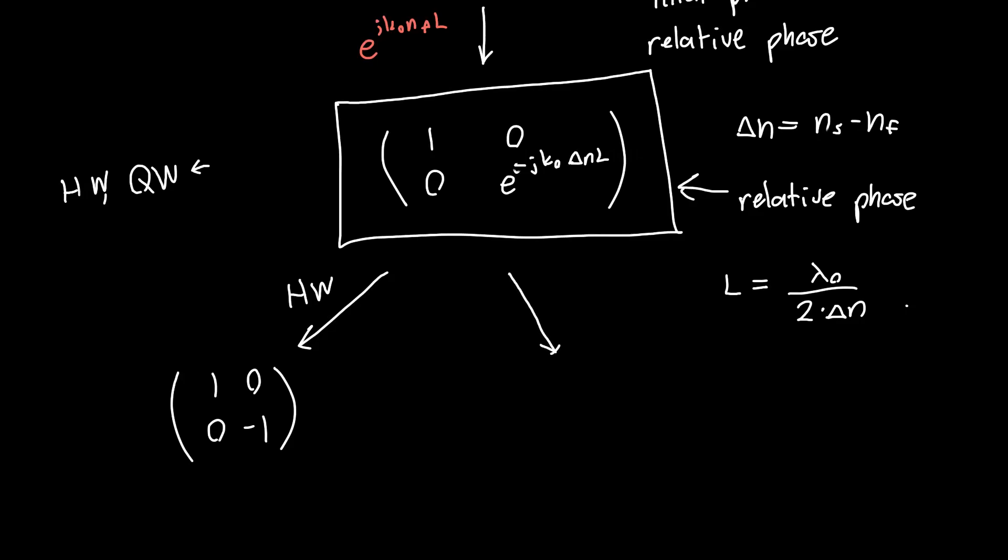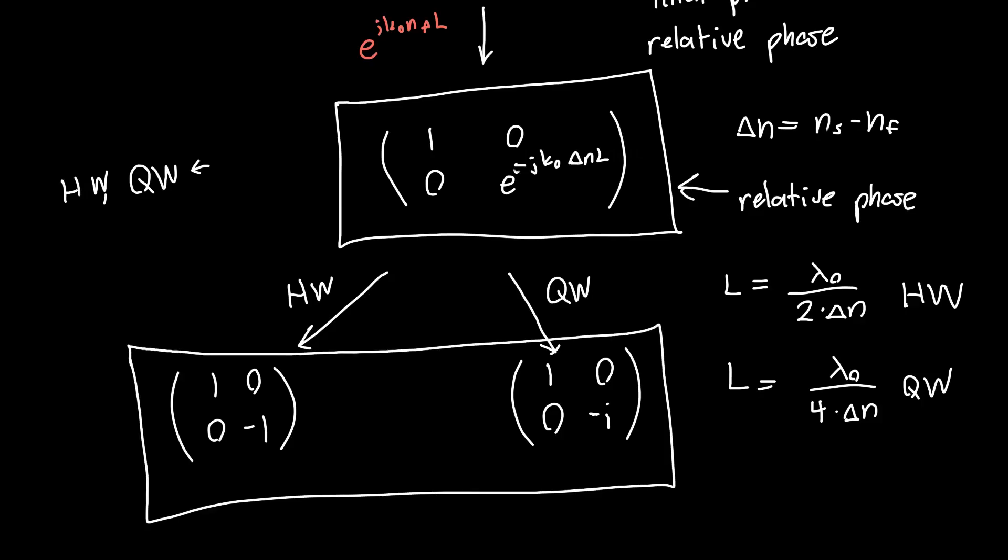Similarly, if you have a quarter waveplate, so this was our half waveplate, a quarter waveplate has a length that you might expect. It's just half of a half waveplate, or lambda naught over 4 times delta n. And the delta n's just there because we want our difference between our slow and fast axis to be a half wavelength. And so the Jones matrix for this guy ends up being 1, 0, 0, e to the minus j pi over 2, which is just minus the imaginary number i. So this is our quarter waveplate. And these are the two most interesting and most powerful Jones matrices in, I would say, probably all of optics.